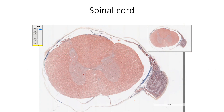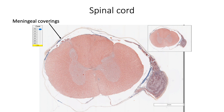Spinal cord is a flattened cylindrical structure located in the vertebral canal. It extends from the upper border of the first cervical vertebra to the lower border of the first lumbar vertebra in adults. Spinal cord is covered by three layers of meninges — that is, dura mater, arachnoid mater, and pia mater — from outside inwards.